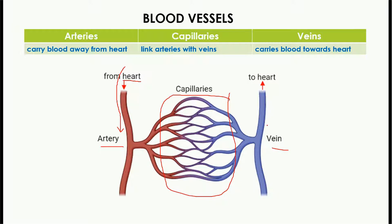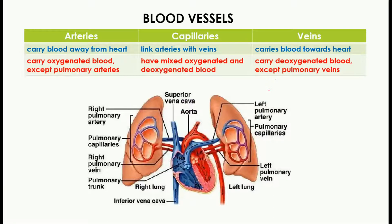Veins carry blood towards the heart — you can see that blood from the veins is going towards the heart. The second difference is that arteries carry oxygenated blood, meaning this blood contains a high amount of oxygen, except the pulmonary artery. In this diagram, this part here is the pulmonary artery and you can see it contains deoxygenated blood.